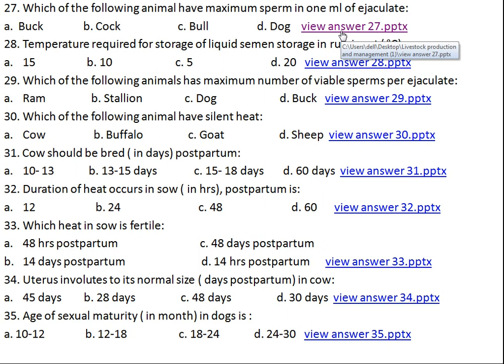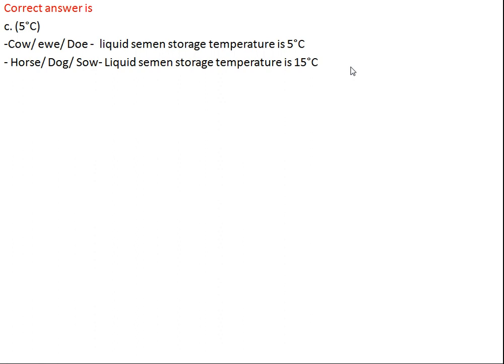Question number twenty-eight: temperature required for storage of liquid semen in ruminants is what? Option A: 15°C, Option B: 10°C, Option C: 5°C, Option D: 20°C. The right answer is Option C, 5°C. In case of cow, ewe, and doe, liquid semen is stored at 5°C. In case of horse, sow, and boar, liquid semen is stored at 15°C. Frozen semen is stored at minus 196°C.